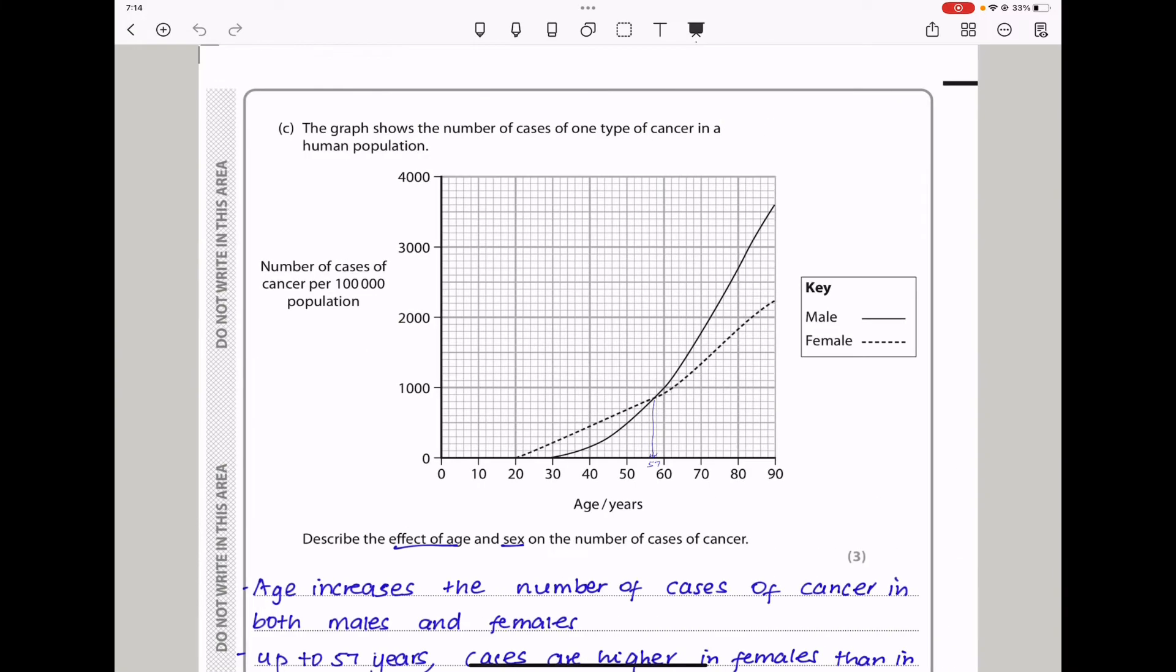Let us continue to the next part. Part C says the graph shows the number of cases of one type of cancer in a human population. So they've given us a graph here, and you can see the vertical axis has the number of cases of cancer per 100,000 in a population, and the horizontal axis has age in years. Here they've given us a key, one for males and another for females. So this curve here is for males, and this curve here is for females. We can see earlier onset of cancer among females than males, and we can see that the number of cases among females are higher than those among males until about 57 years.